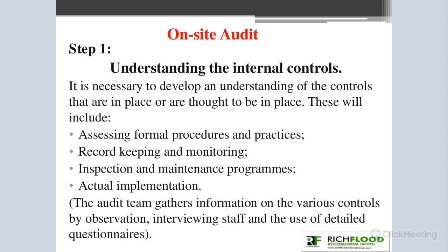The on-site audit comes in various steps. The first step is understanding the internal controls of the organization. It is necessary to develop an understanding of the controls that are in place or are thought to be in place. This internal control will include assessing formal procedures and practices, record keeping and monitoring, and inspection and maintenance programs.